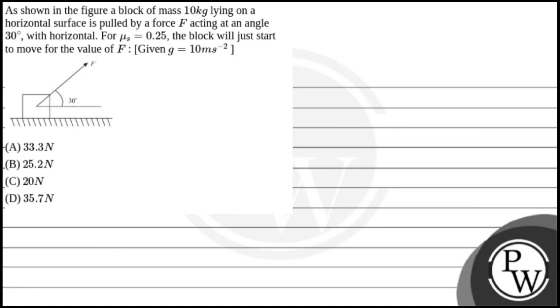Our options are: A) 33.3 N, B) 25.2 N, C) 20 N, and D) 35.7 N. The key concept used here is friction.